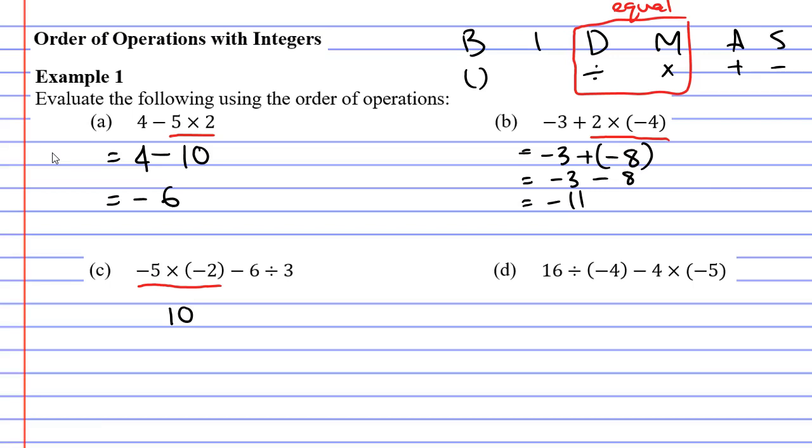We also need to carry down anything we didn't use. We didn't use the negative 6 divide 3 part of this problem. What do we do now? Well we've got subtraction and division. Division needs to be performed before subtraction. 6 divide 3 is 2 and carry down the 10 and the minus sign. 10 minus 2 equals 8.